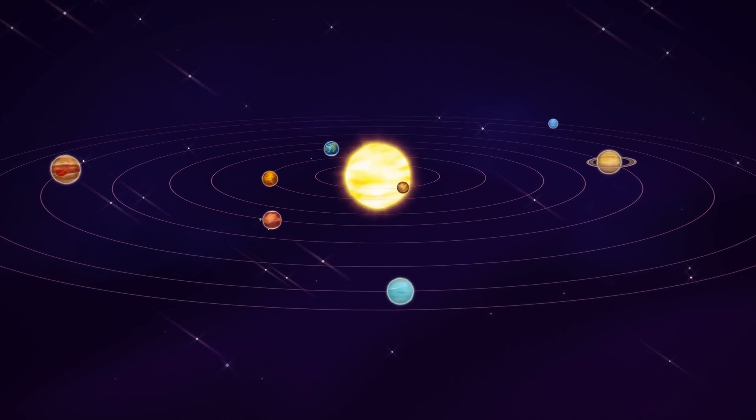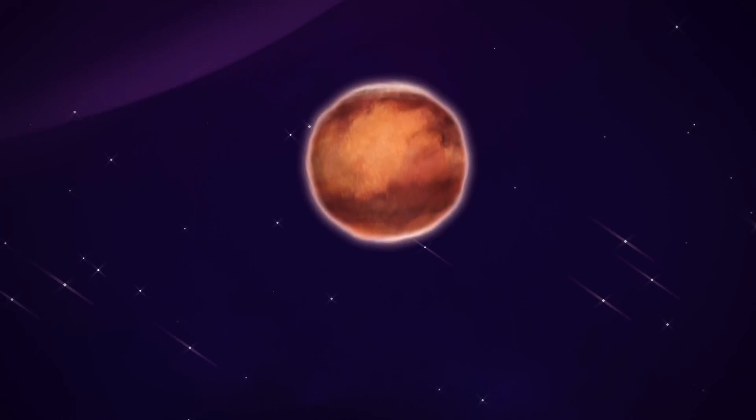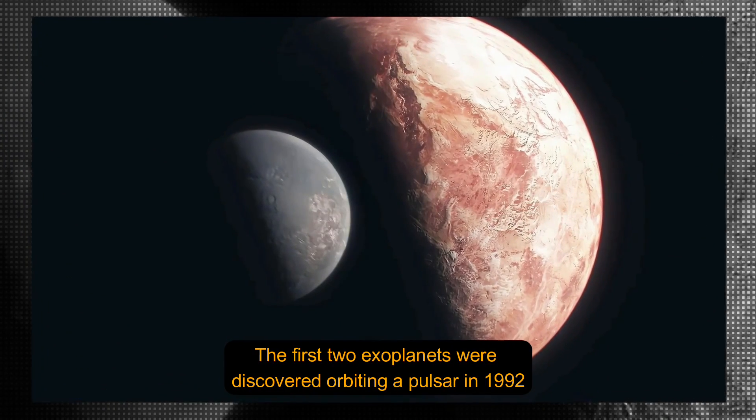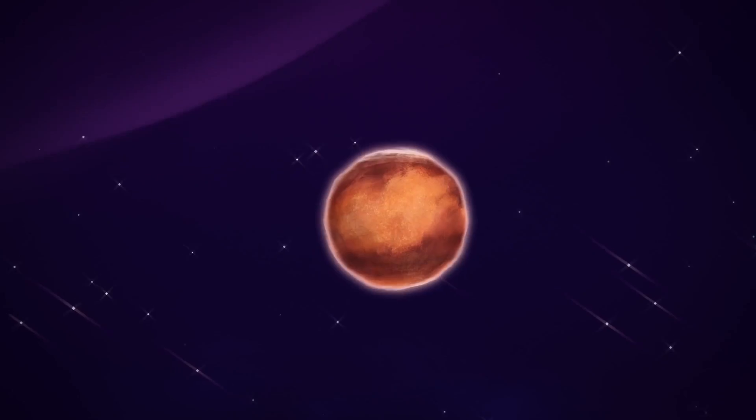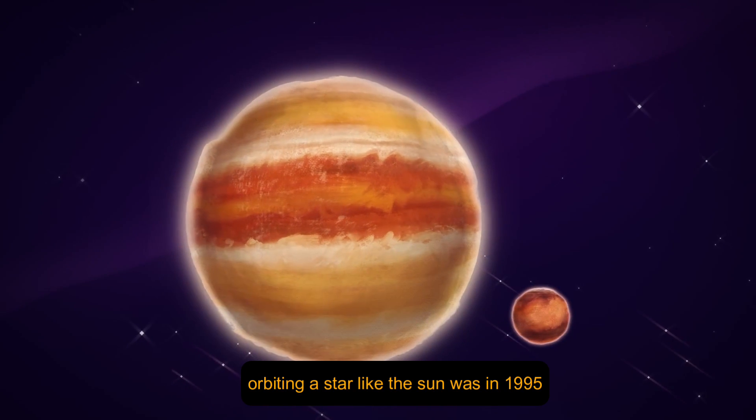Let's begin by understanding what exoplanets are. Planets that orbit stars other than our sun are known as exoplanets. The first two exoplanets were discovered orbiting a pulsar in 1992, and the first one confirmed to be orbiting a star like the sun was in 1995.